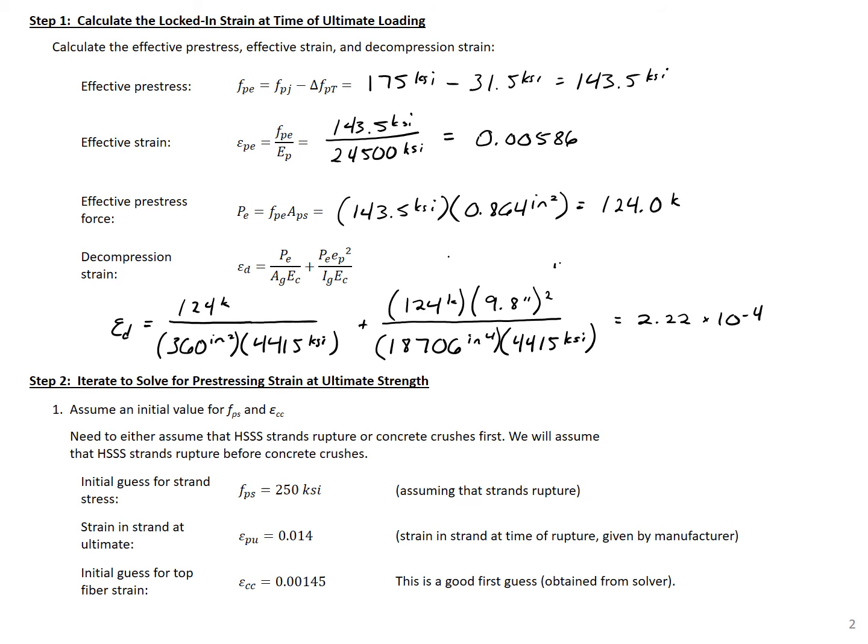Our next step is to iterate to solve for our pre-stressing strain at ultimate. We need to iterate for both the strain and stress in our pre-stressing and also the strain in our top fiber. With these high-strength stainless steel strands, because they have less ductility than traditional strands, we need to either assume that our strands rupture and rupture controls failure, or that our concrete crushes first and crushing controls failure. You need to assume one fails first, go through and check, and correct this assumption if needed. We're going to assume that failure is controlled by the rupturing of our strands.